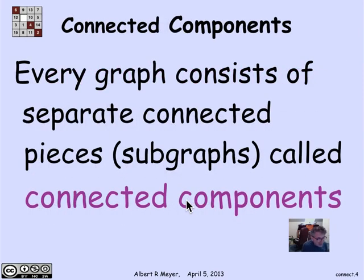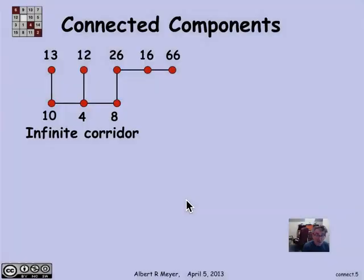Now, every graph you can think of as broken up into the mutually connected pieces or subgraphs, which are called its connected components. So let's look at a simple example.